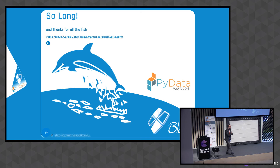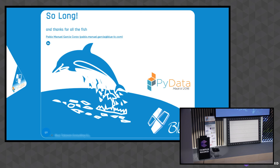A question was raised about high-performance time series databases such as InfluxDB, Prometheus, or Heroic from Spotify. The speaker confirmed they played with InfluxDB, but chose Arctic because they love MongoDB — it's very Pythonic and worked nicely with pandas — and Gnocchi because they were already using OpenStack. InfluxDB would be a good option too; the tools mentioned were particularly Python-friendly choices, not exhaustive recommendations.